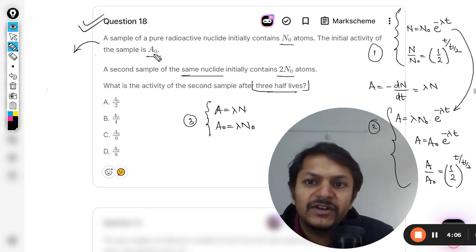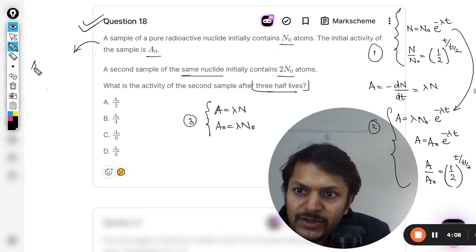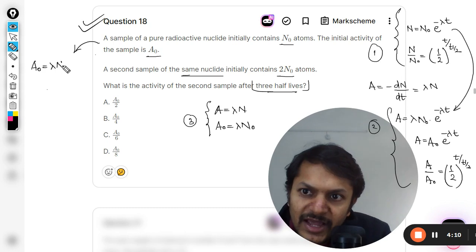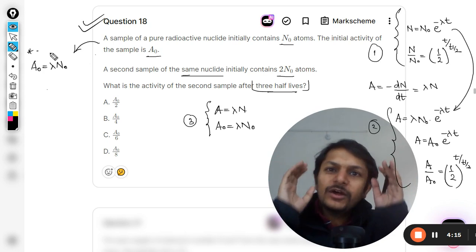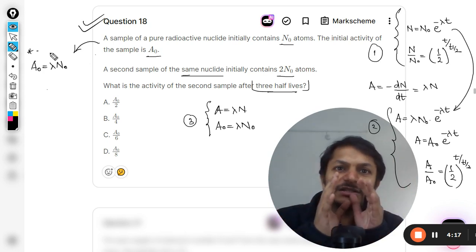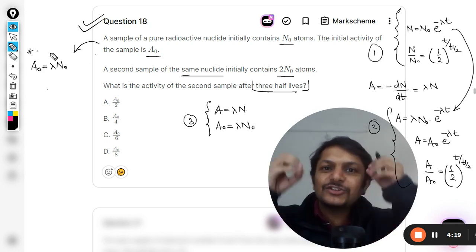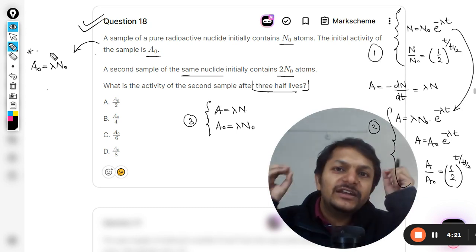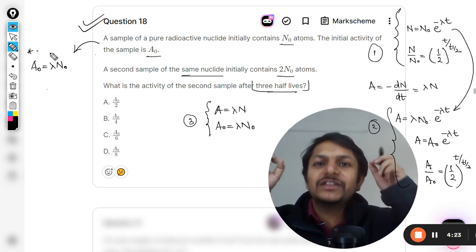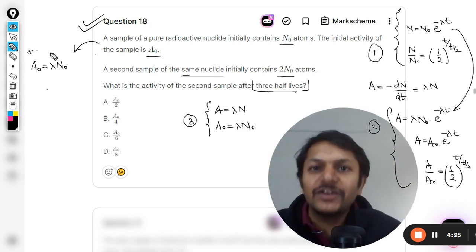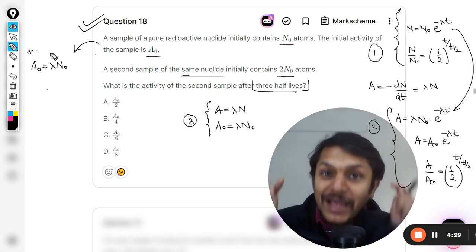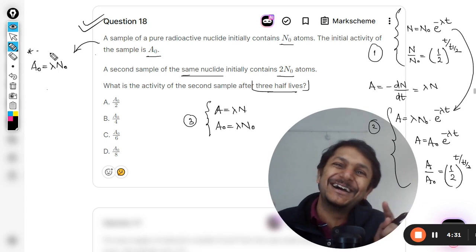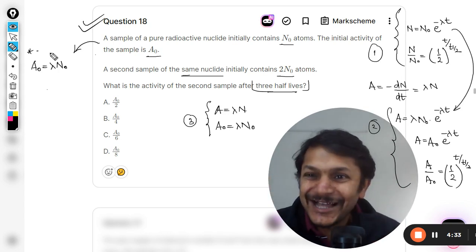Activity and number of nuclei are related like this. Now this is case number one: A₀ and N₀ can be related as this. This is one of those hidden formulas, one of those secluding formulas, I can say, that is not present anywhere—neither in the books nor in the data booklet. This video might be the only video where you are getting this formula. You need to note this.